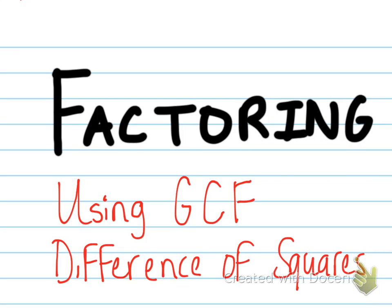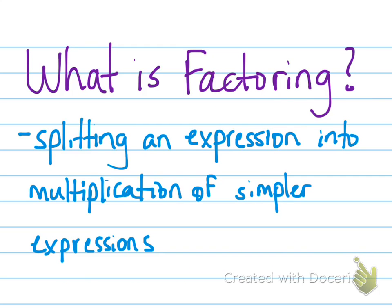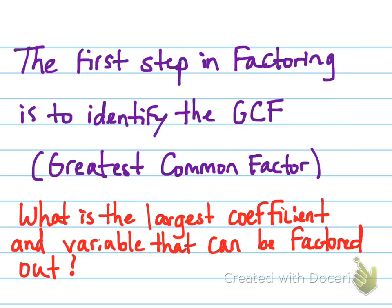In this first video on factoring, we're going to be looking at using the greatest common factor and difference of squares in order to factor polynomials. Factoring is when you take an expression and you split it into multiplication of simpler expressions. The first step in factoring is to identify the GCF, or the greatest common factor. When thinking about the greatest common factor, what is the largest coefficient and variable that can be factored out? Another way to think about factoring is dividing. We want to be able to take out numbers that divide into terms evenly.